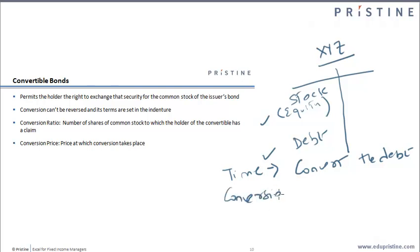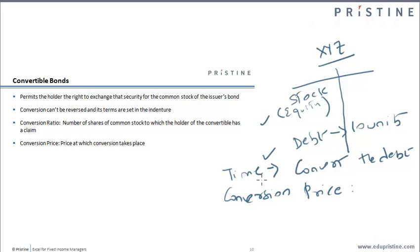There is a conversion price given, which is the price at which conversion takes place. At the time of issuance of the convertible bond, a conversion ratio is set, which means there are a certain number of shares of common stock which a particular holder of debt would get. For example, if someone is holding 10 units of debt, the ratio could be 10 to 100, or 1 to 10, which means for every one debt unit, you get 10 shares.